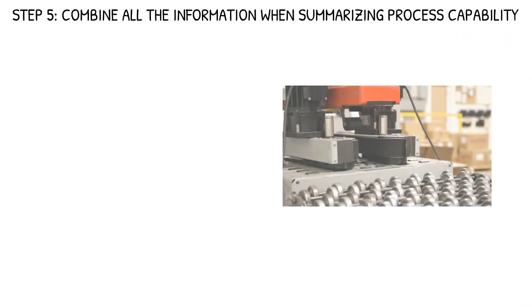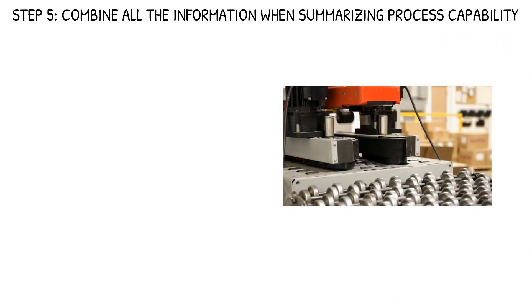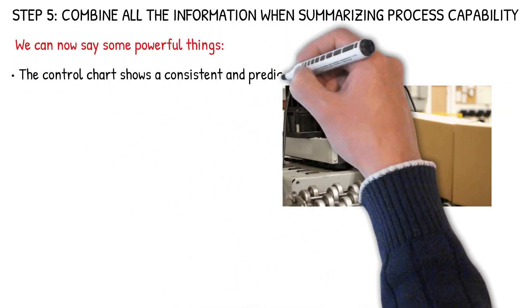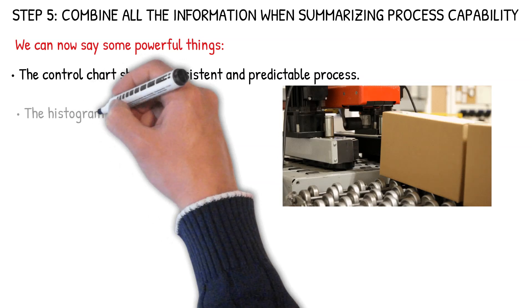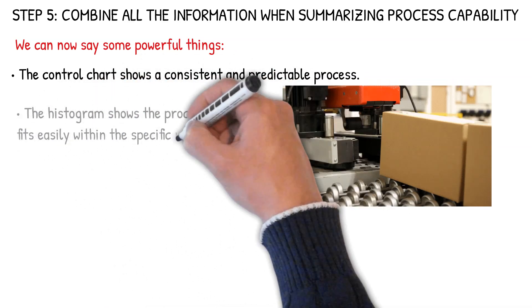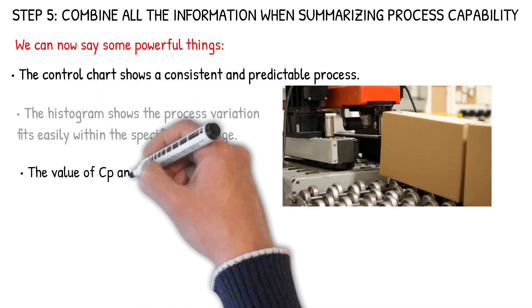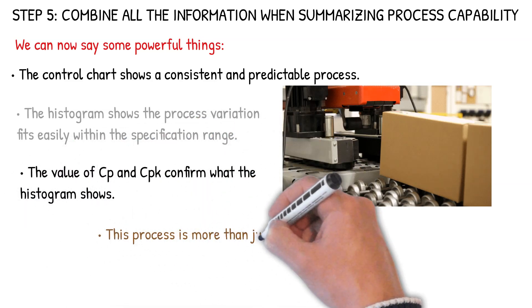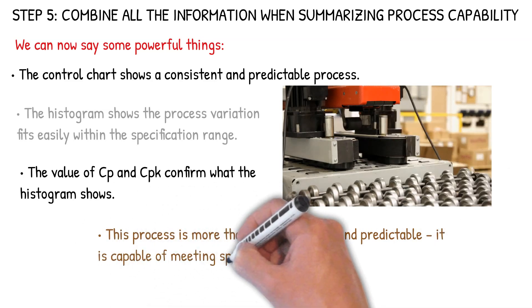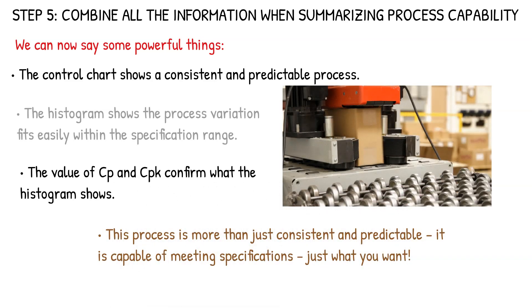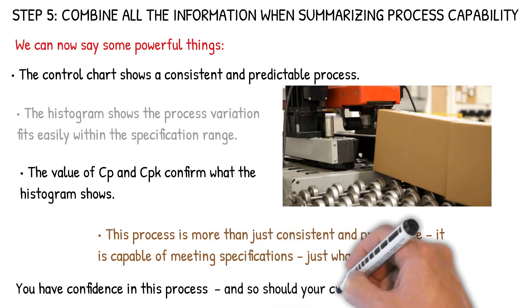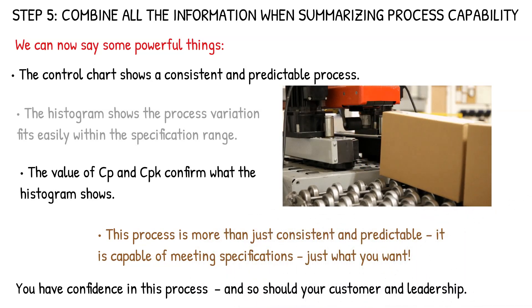Now you're going to combine all the information to help summarize process capability. We can say some very powerful things now about this process. The control chart shows a consistent and predictable process. The histogram shows the process variation fits easily within the specification range. The values of CP and CPK confirm what the histogram shows. This process is more than just consistent and predictable. It is capable of meeting specifications. You have confidence in this process and so should your customers and leaders.